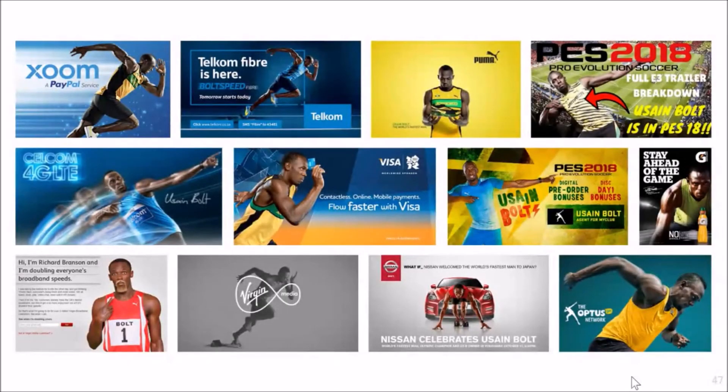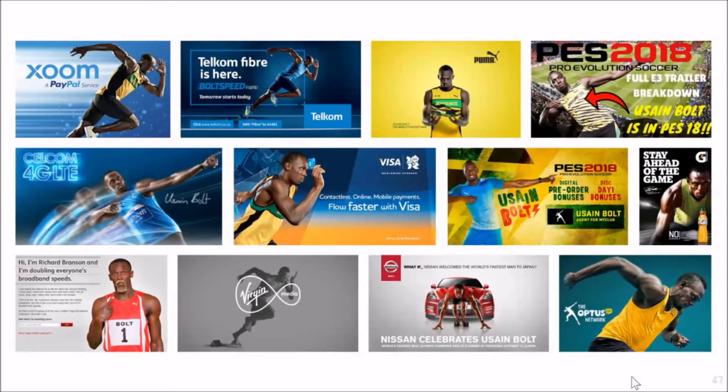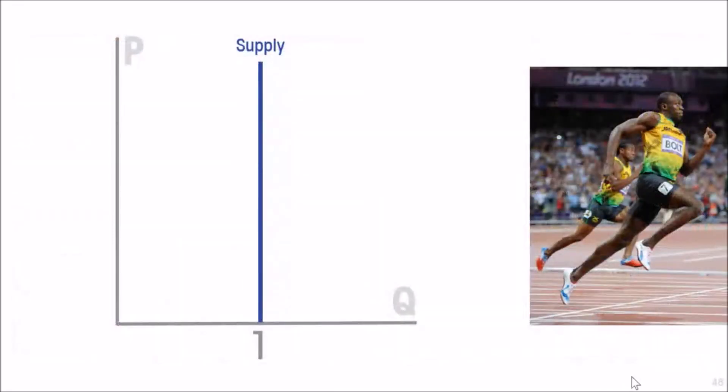Now when I say every event, I don't just mean every track and field event. Usain Bolt gets invited to countries just to show up. He got invited to India to play cricket, to Australia to play football. This is not because his cricketing skills, which are not that bad, or his footballing skills are anything an audience would care to see in and of themselves. No, it's because they want to see the fastest man in the world.